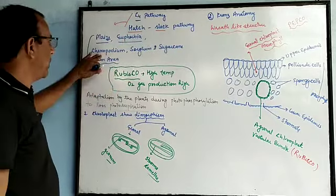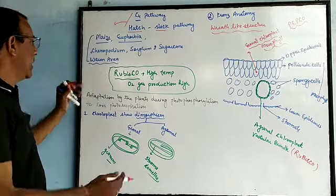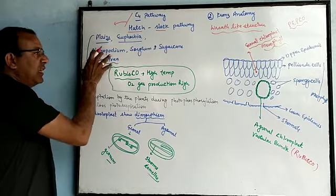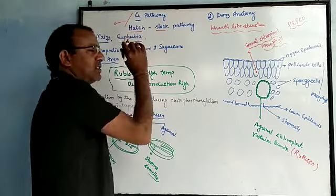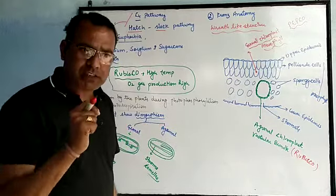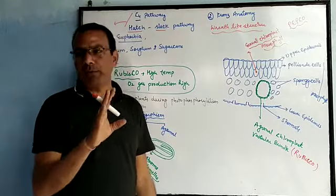It is called the C4 pathway because the first product which is produced contains four carbon molecules.